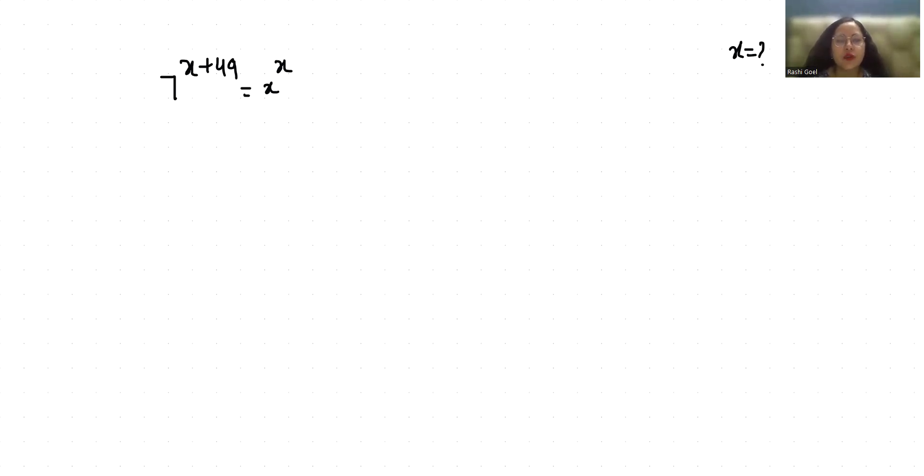According to exponent rule, x power m plus n we can write it as x power m times x power n. So 7 power x times 7 power 49 equals x power x.